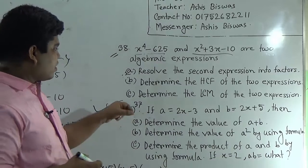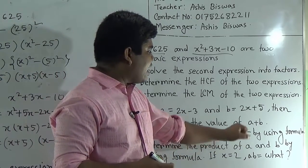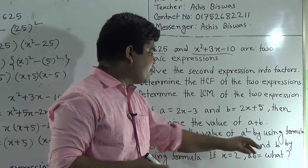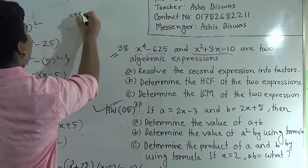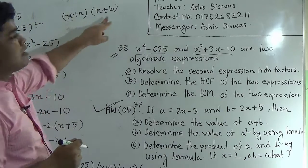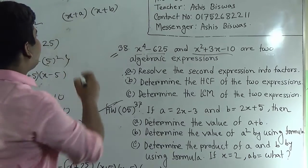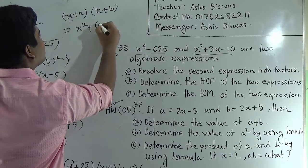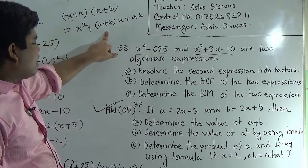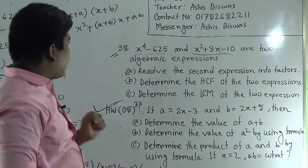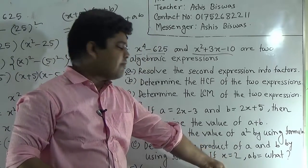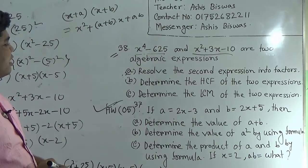Question C: determine the product of A and B by using the formula. If x equals 2, what is AB? The formula is (x plus A)(x plus B) equals x squared plus (A plus B)x plus AB. By using this formula you can find out the product of A and B. After that, put the value x equals 2 and you get the required value of AB.